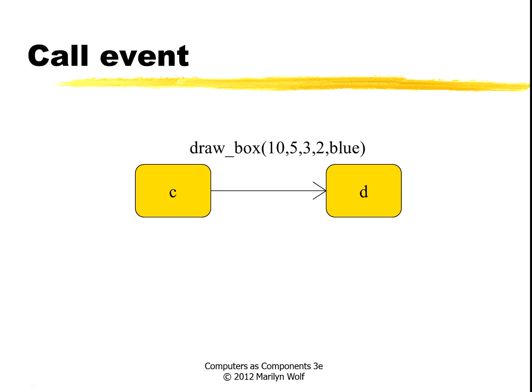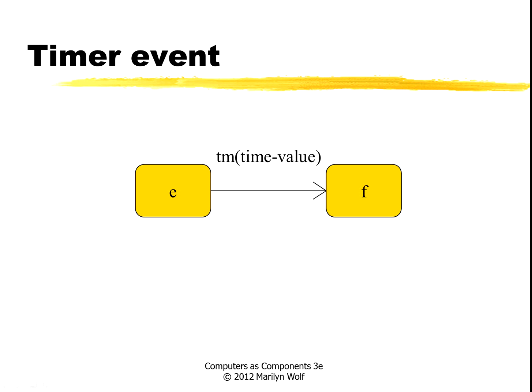Here's a call event. So when you're in state C, that state calls the drawbox function and goes to state D. And for a timer event, you're in state E. The timer times out with a certain value, then you go to your next state.